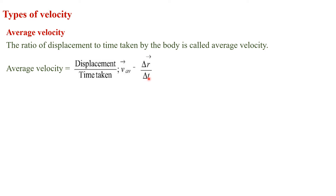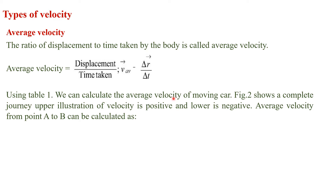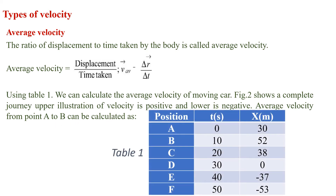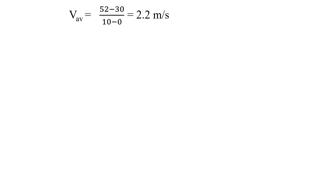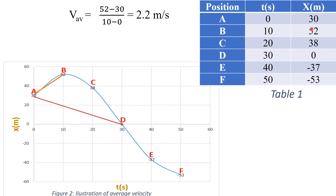Using table 1 we can calculate the average velocity of a moving car. Figure 2 shows a complete journey — upper illustration shows positive velocity and lower shows negative. Average velocity from point A to B is calculated by taking the difference of displacement (52 − 30) divided by the difference of time (10 − 0), giving an average velocity of 2.2 meters per second.